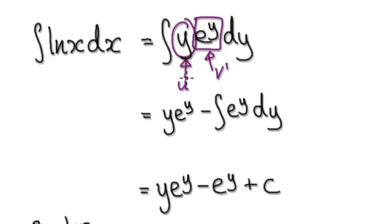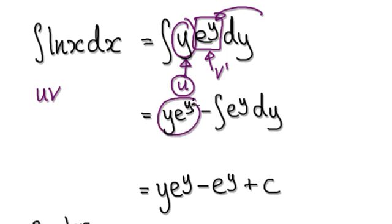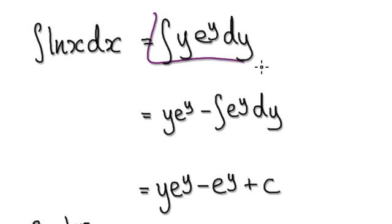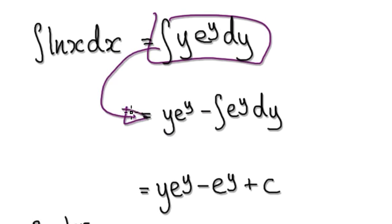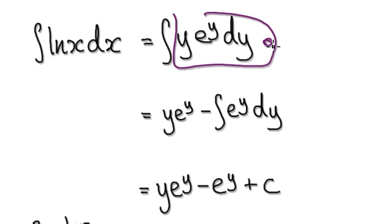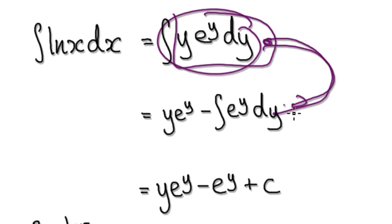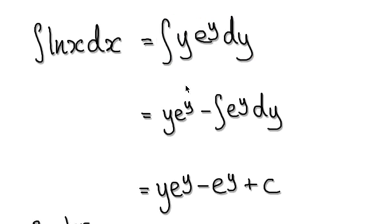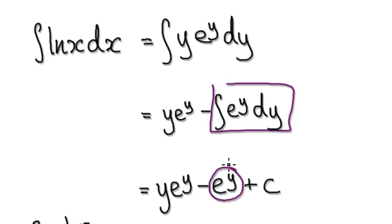The first part of integration by parts is u times v — so u times the integral of v prime, which is e to the y — giving y times e to the y. Then take away u prime times v. Learn to jump through these steps in your head when they're simple like this. Integrating the remaining term gives e to the y, so the result is y e to the y minus e to the y.